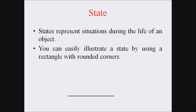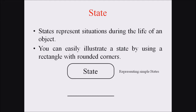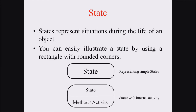Now we are representing the different notations in a state diagram. First, we are discussing the state. The state represents the situations during the life of an object and we can illustrate a state by using a rectangle with rounded corners. Inside that rectangle we can represent the state name.